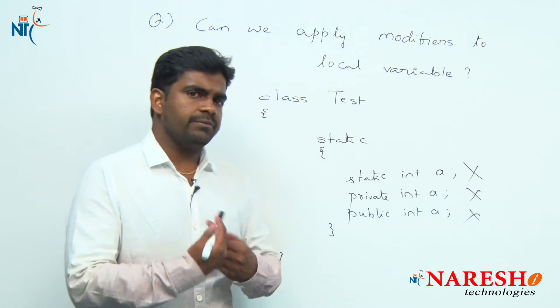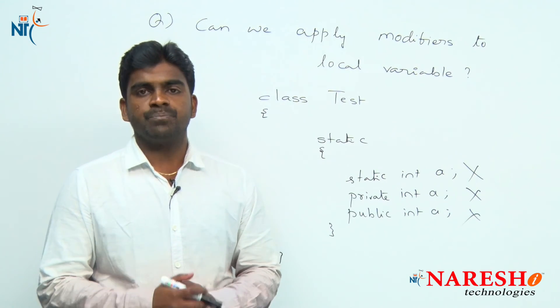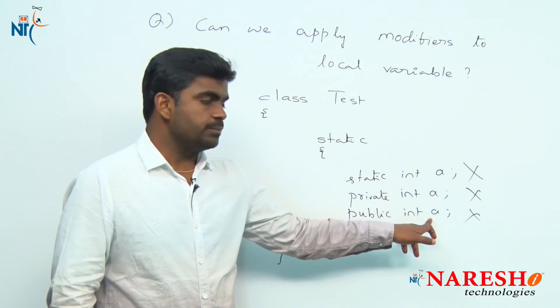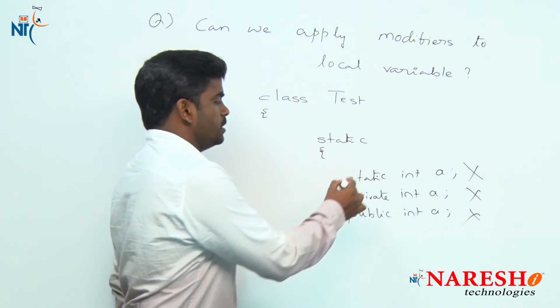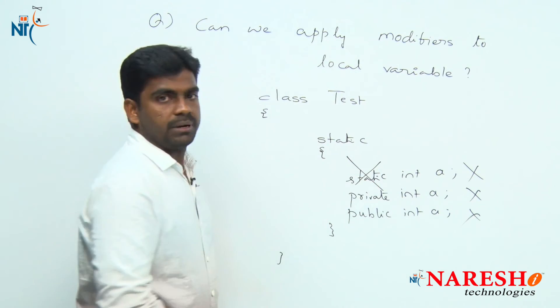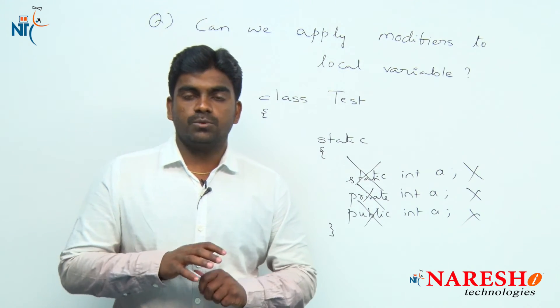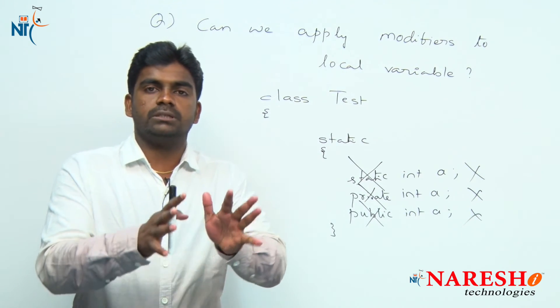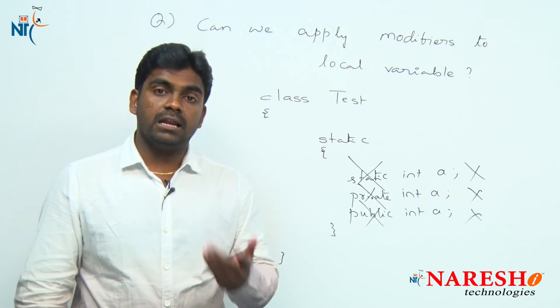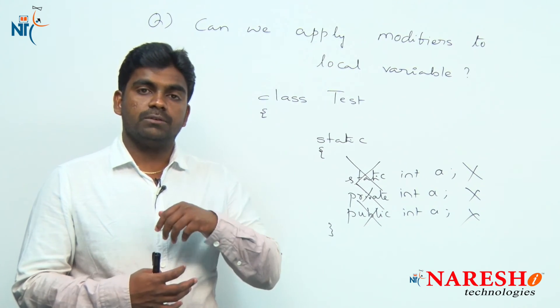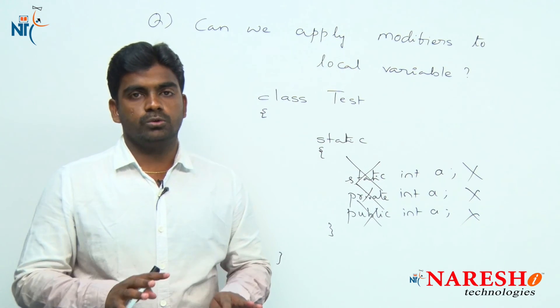Whether it is a private variable or public variable, any level of access modifier is no use. Local variables can be accessed only within the block. Why is it necessary to apply static, private, or public? No use. A local variable is restricted to a particular block. From outside the block you cannot access, whatever the modifier - static, private, public, anything - no use.